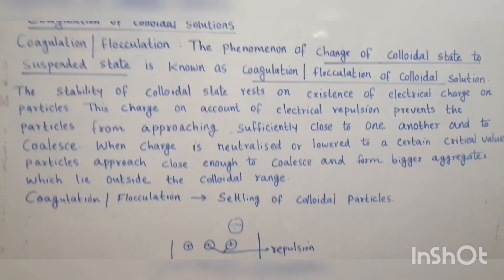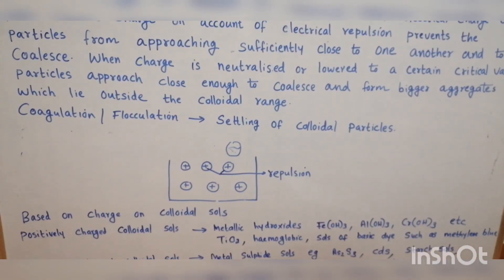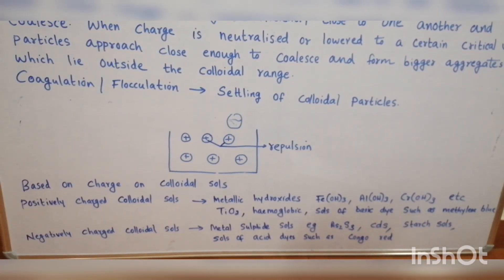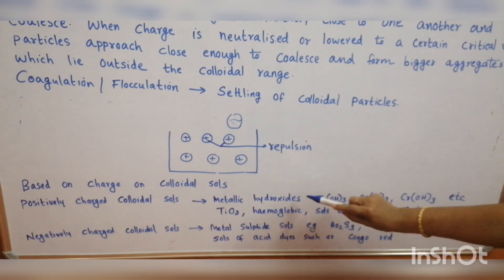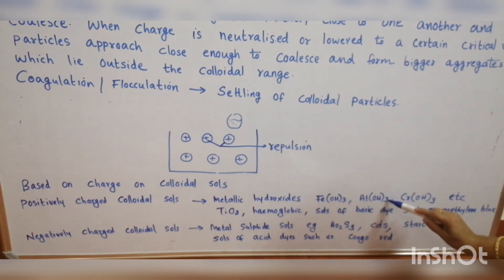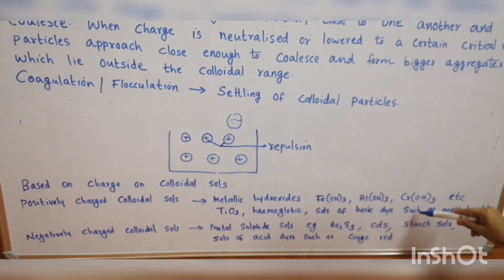Based on the charge of colloidal sols, there are positively charged and negatively charged colloidal sols. Positively charged colloidal sols include metallic hydroxides such as ferric hydroxide, aluminium hydroxide, and chromium hydroxide, as well as hemoglobin and salts of basic dyes such as methylene blue.